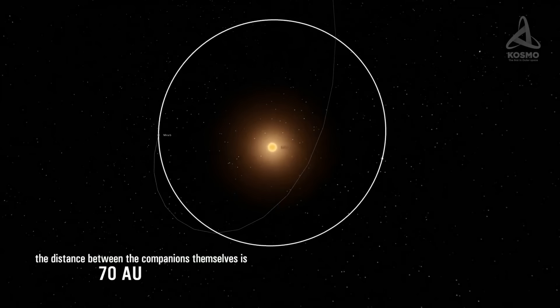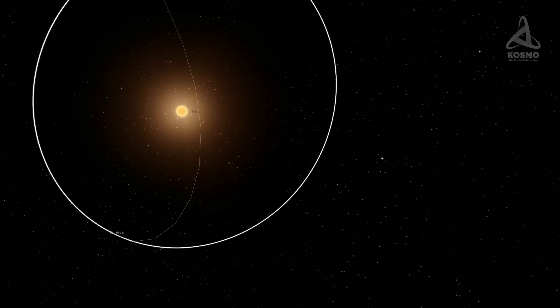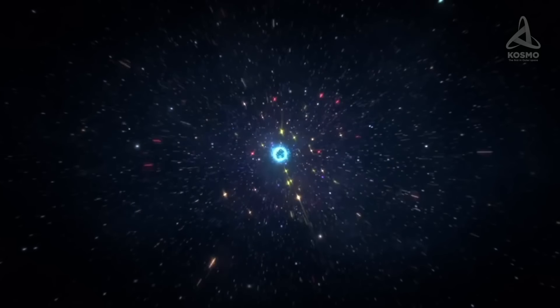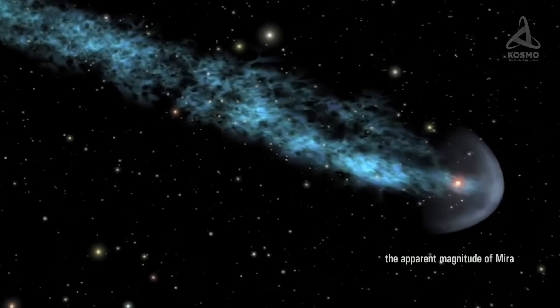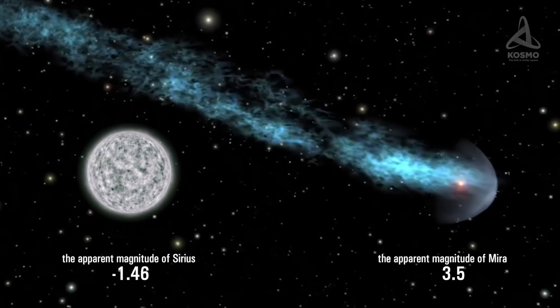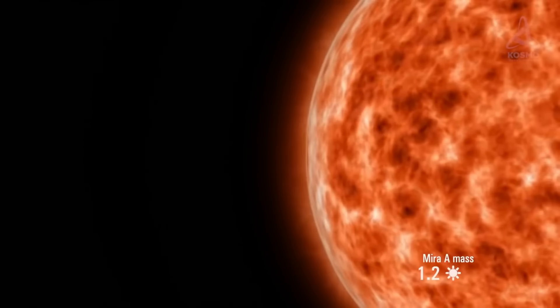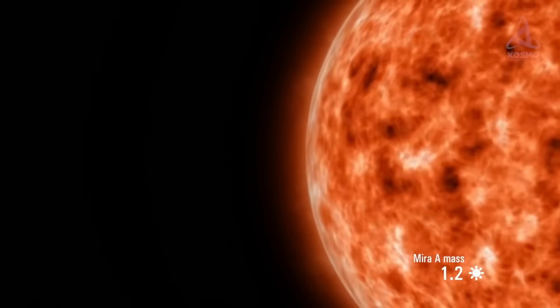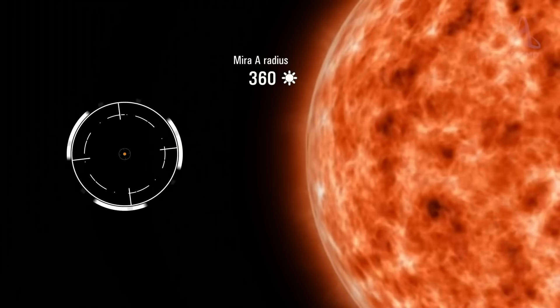The first component in the system is a pulsating variable star with average apparent magnitude 3.5, though depending on the phase the value may fluctuate between 10 and 2. To compare, the apparent magnitude of Sirius is minus 1.46. The mass of the system's first component is approximately 1.2 that of the Sun.